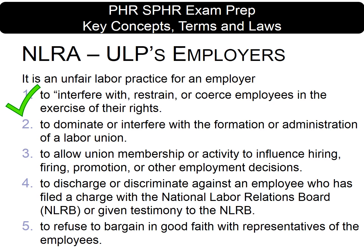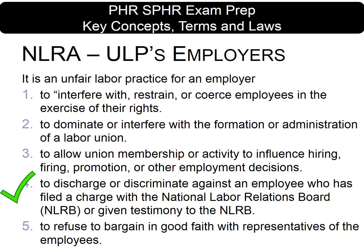Congress identified five unfair labor practices and declared them unlawful. It is an unfair labor practice for an employer to interfere with, restrain, or coerce employees in the exercise of their rights. It is an unfair labor practice for employers to allow union membership or activity to influence hiring, firing, promotion, or other employment decisions. It is an unfair labor practice to discharge or discriminate against an employee who has filed a charge with the National Labor Relations Board or given testimony to the NLRB. It is an unfair labor practice for an employer to refuse to bargain in good faith with representatives of the employees.